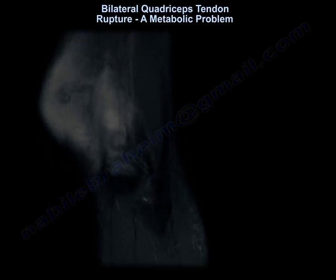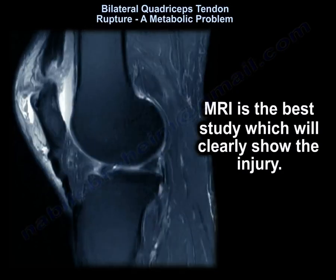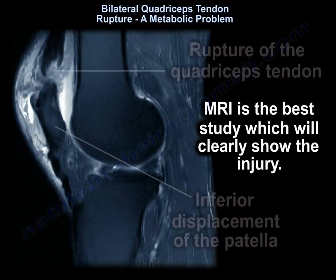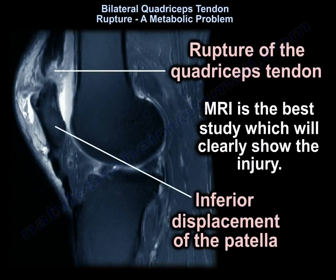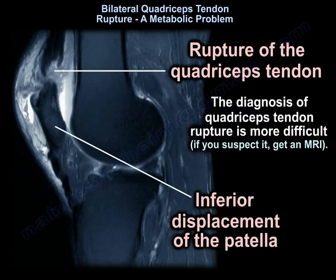MRI is the best study, which will clearly show the injury. You can see rupture of the quadriceps tendon and inferior displacement of the patella. The diagnosis of quadriceps tendon rupture is more difficult, so if you suspect it, get an MRI.